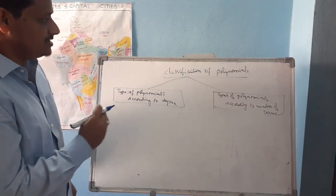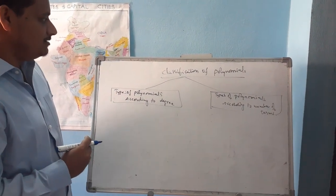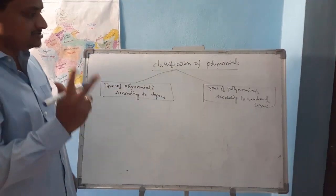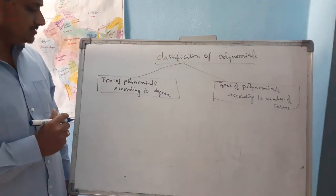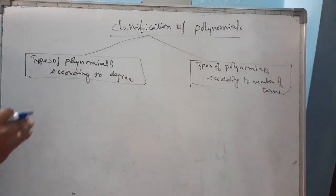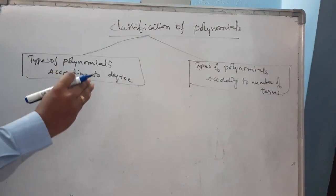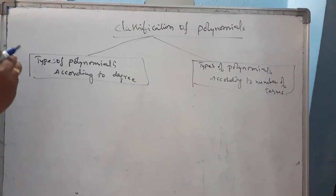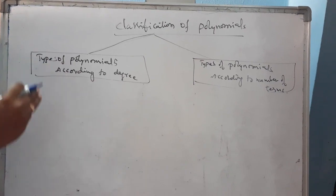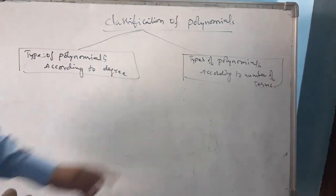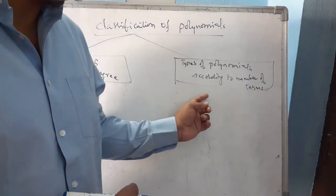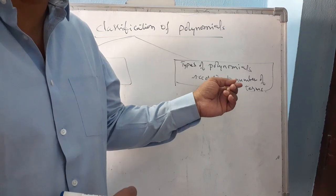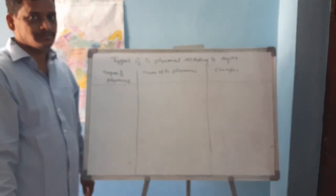The next topic is the classification of polynomials. Polynomials can be classified in two ways: one is the types of polynomial according to degree, and the second is the types of polynomial according to the number of terms.